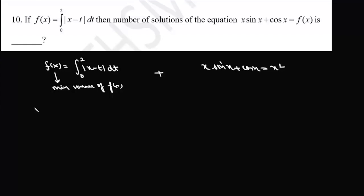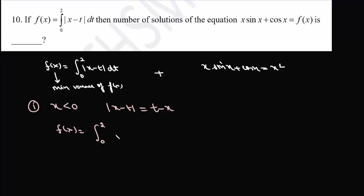We will start solving this question by considering different intervals for x. First, we take the interval where x is less than 0. When x < 0, then |x - t| simplifies to t - x, because t lies between 0 and 2 and x is negative. So f(x) becomes the integral from 0 to 2 of (t - x) dt, which evaluates to f(x) = 2 - 2x.